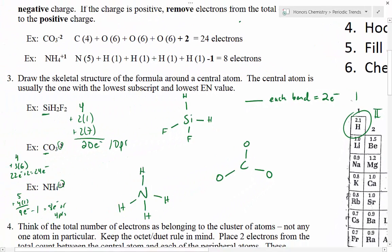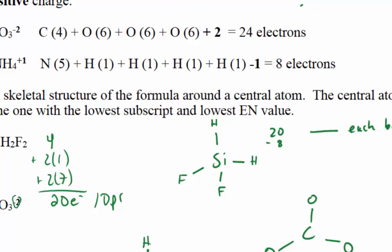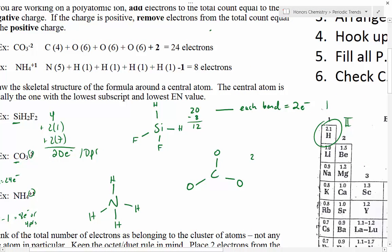Once I've connected the atoms, I'm going to look at each bond that equals two electrons and subtract them from my total. For silicon, we started out with 20 electrons, and then we connected four bonds, which subtracts eight electrons, so I have 12 electrons left to work with. For the carbonate example, we had 24 electrons and we subtract six electrons to give us 18 still. For ammonium, we had eight total electrons minus eight, which takes us right to zero — we don't have any left.